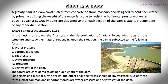Now let us see the forces acting on a gravity dam. While designing a dam, we must consider various forces: first, water pressure (hydrostatic pressure); second, seismic pressure or earthquake forces; third, silt pressure; fourth, wave pressure; fifth, ice pressure; sixth, the self-weight of the dam; and seventh, uplift pressure. This uplift pressure also plays a major part in the design of a dam. In total, there are seven pressures acting on a gravity dam.